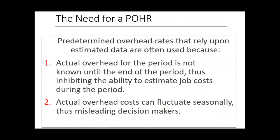The reason we use a predetermined overhead rate is that we don't know the actual overhead cost until the end of the period — when we know what was spent on indirect material, indirect labor, and other manufacturing costs. But that's too late because we have to assign product costs at the beginning of the period. Therefore, we estimate overhead costs to be assigned to each product using a predetermined overhead rate.